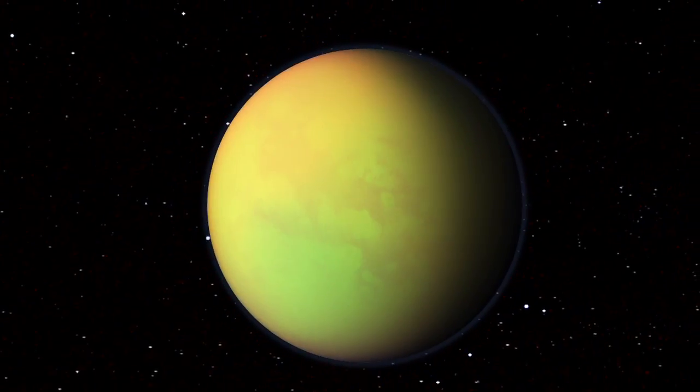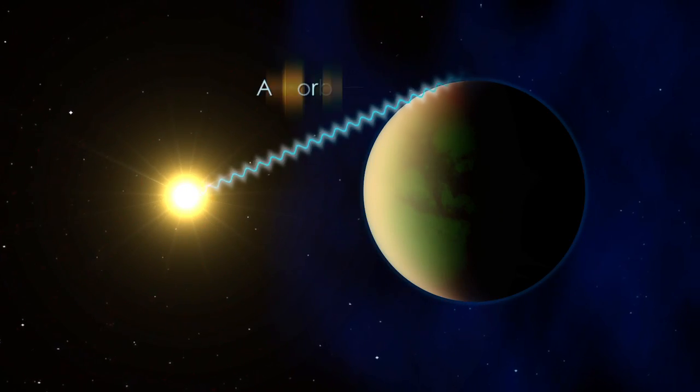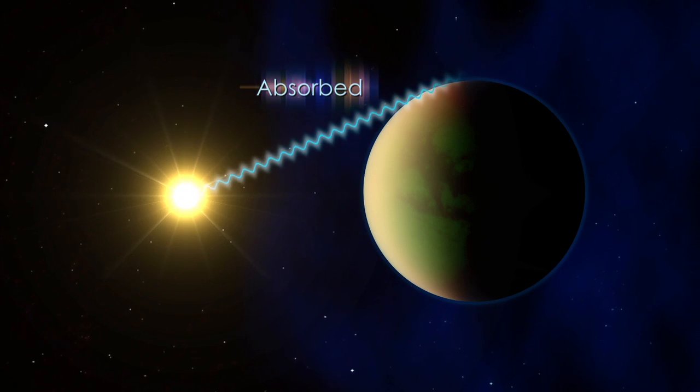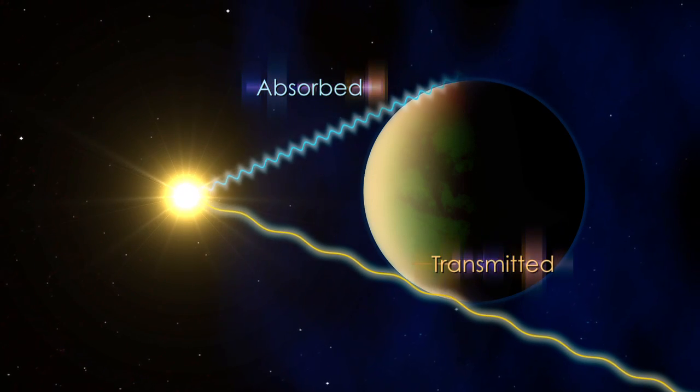As the planet crosses its star, its atmosphere absorbs certain wavelengths of light, or colors, while allowing other wavelengths to pass through.